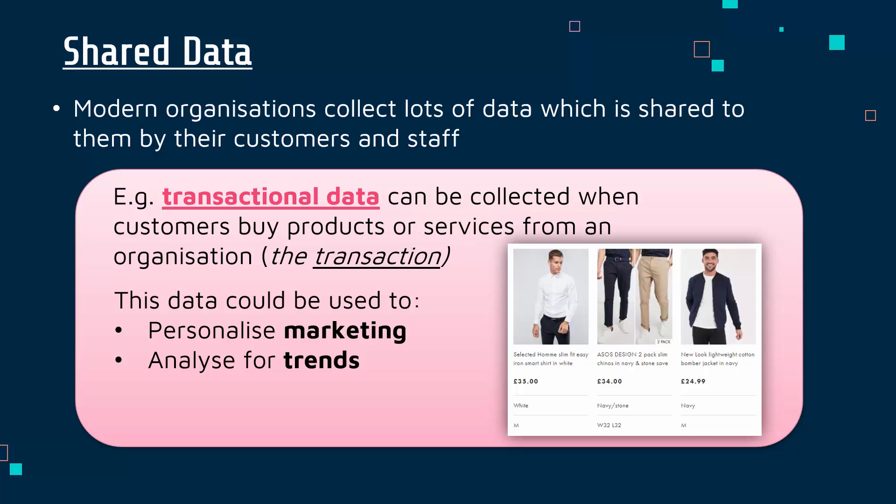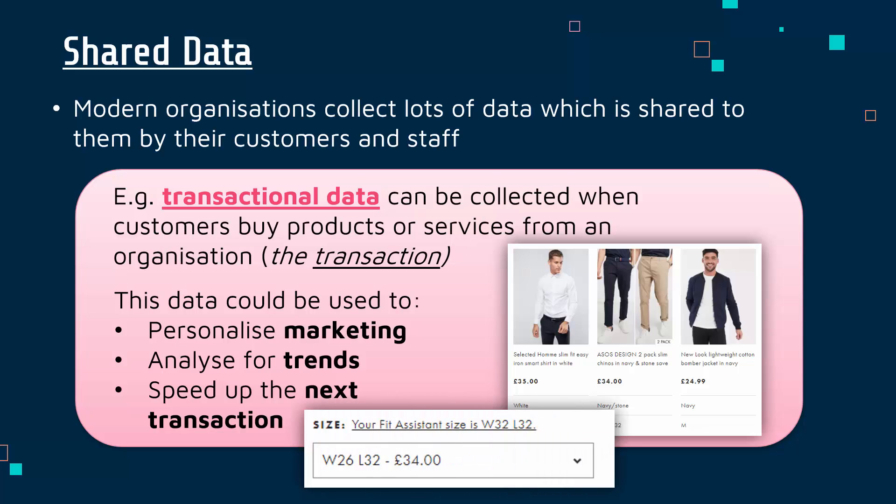If you've got not much data, you can't really analyse very effectively. If you've got lots of data, you can do some quite powerful analysis. A third example of why a company like ASOS might hold onto my transaction data is that it can help speed up the next transaction. Because I've ordered trousers in a certain size in the past, if I try to buy trousers in a different size, it gives me an alert saying my fit assistant size is W32L32 — recommending I buy a particular size based on my history. That's one example of how data can be used to speed things up and make things more accurate the next time a transaction occurs.